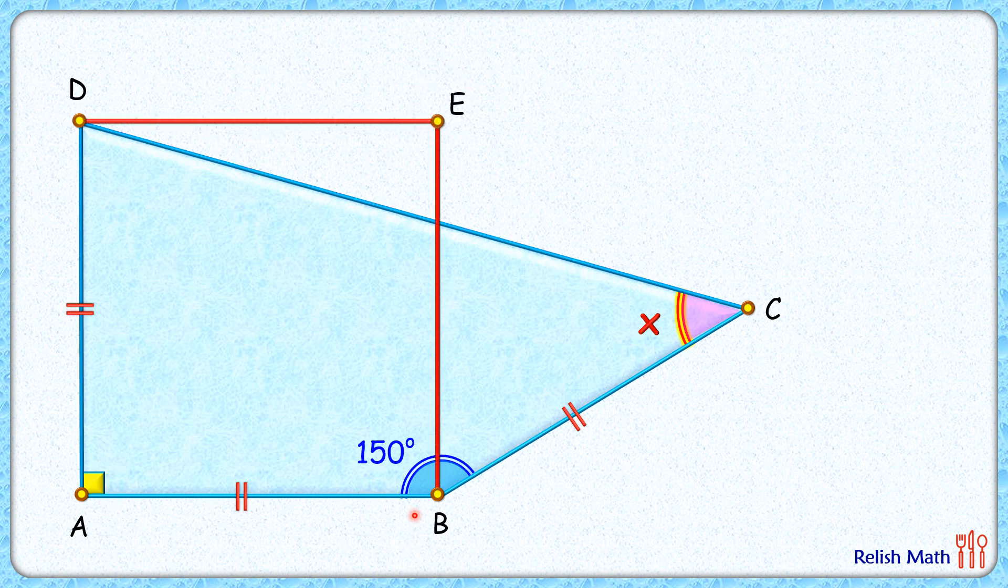As this is a square, so all the sides are equal to each other. This angle here is 90 degrees, and thus this remaining angle, that will be 150 minus 90, or 60 degrees. Let's join EC here.